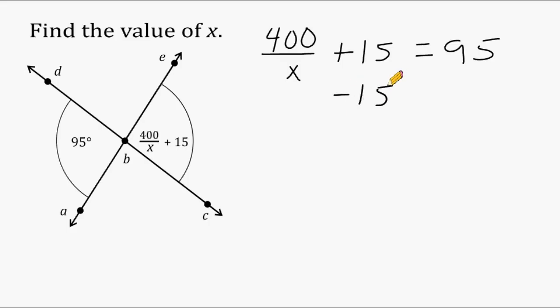So we write minus 15 right beneath. So they cancel out because positive 15 minus 15 would equal 0. We have to do the same thing on the other side of our equal sign. And 95 minus 15 would give us 80. Now we have to bring down the 400 divided by x.